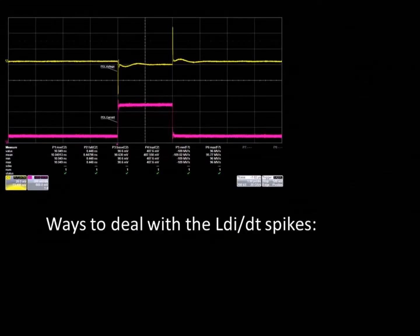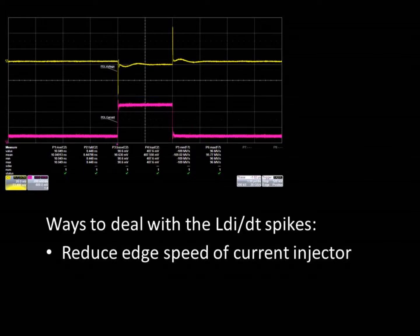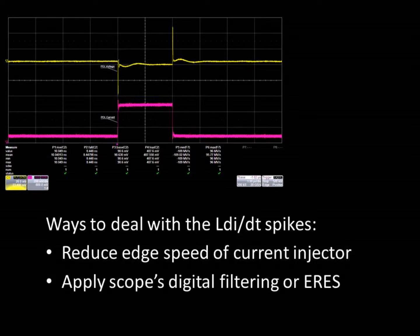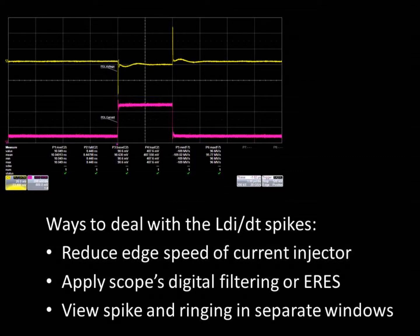We do have a few options. Since the load step in this case is generated using a current injector, we can reduce the edge speed of the current injector to reduce the LDI-DT spike while retaining the fidelity of the control loop performance measurement. We could also use the scope's digital filter capabilities, or ERES, to remove the spike while retaining the control loop response. Another option is to use two measurement windows, one at the scales shown to see the spike, and the other one at a zoom view of the ringing.